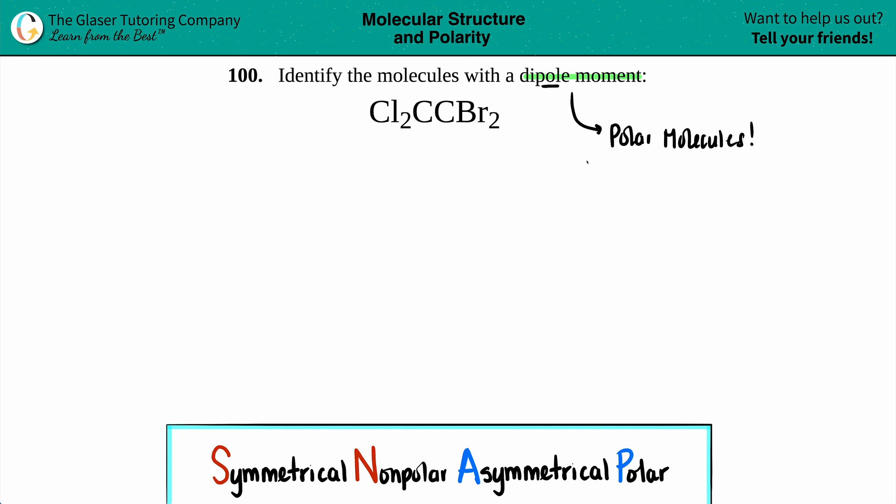A dipole moment is when you have an unequal pull of electrons to one side of the molecule, whether it's up, down, left, right, or diagonal. There has to be an unequal sharing or pull of electrons towards one side.